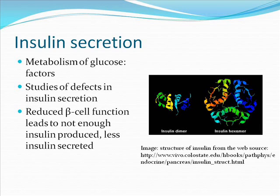The metabolism of glucose depends on various factors. From the study, two factors were found to be very important: insulin action and secretion. People with type 2 diabetes are resistant to insulin and their beta cell function is reduced, leading to a very low amount of insulin being produced. Also, less insulin is secreted due to insulin resistance and reduced beta cell function.